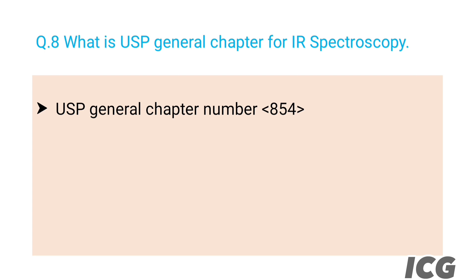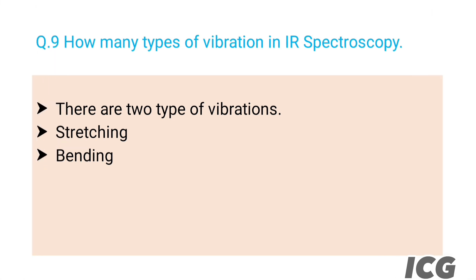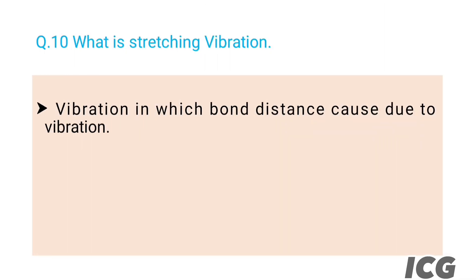The next question is: how many types of vibrations are in IR spectroscopy? The answer is there are two types: number one, stretching, and number two, bending. The next question is: what is stretching vibration? The answer is vibration in which bond distance changes due to vibration is called stretching vibration.